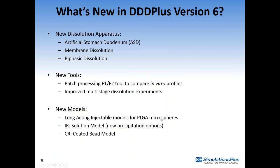That's the introduction to the software. Now I'll go into the new features of version 6. The main new features are three new apparatuses: the artificial stomach duodenum, membrane dissolution, and biphasic dissolution. New tools include batch processing and an F1 and F2 tool for reading in multiple in vitro profiles and calculating F1/F2. There are also improved multistage dissolution experiments, new models for long-acting injectable PLGA microspheres, an IR solution model for precipitation, and a CR-coated bead model.